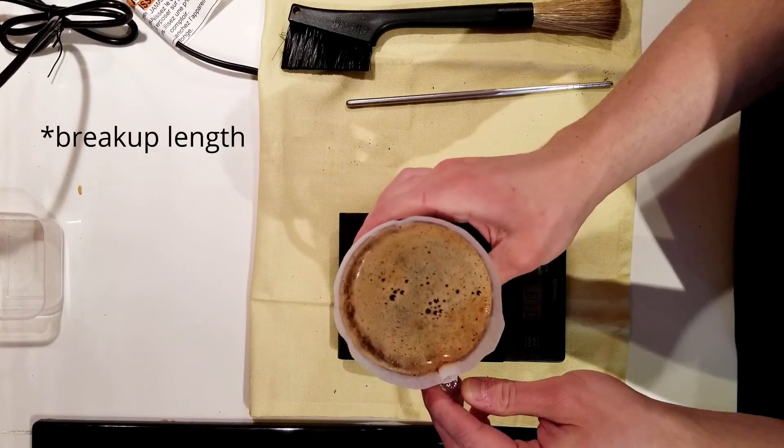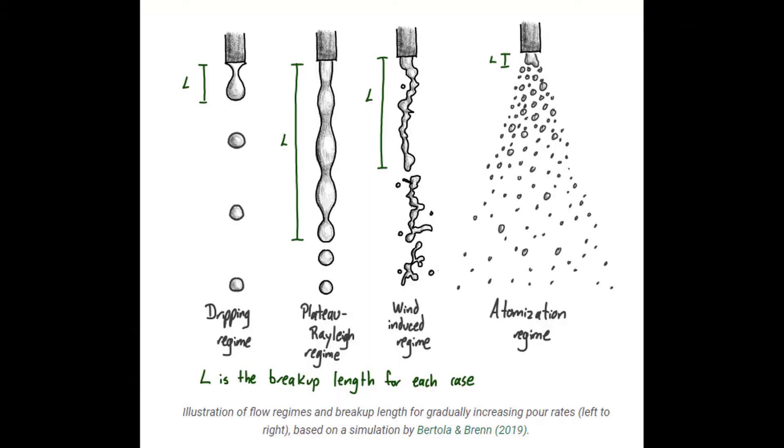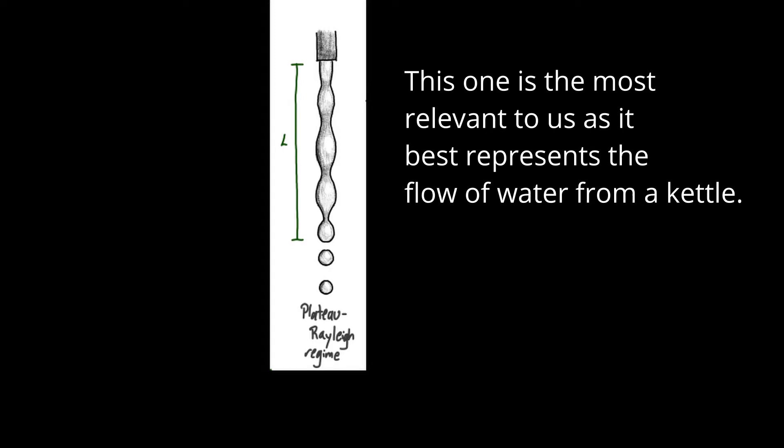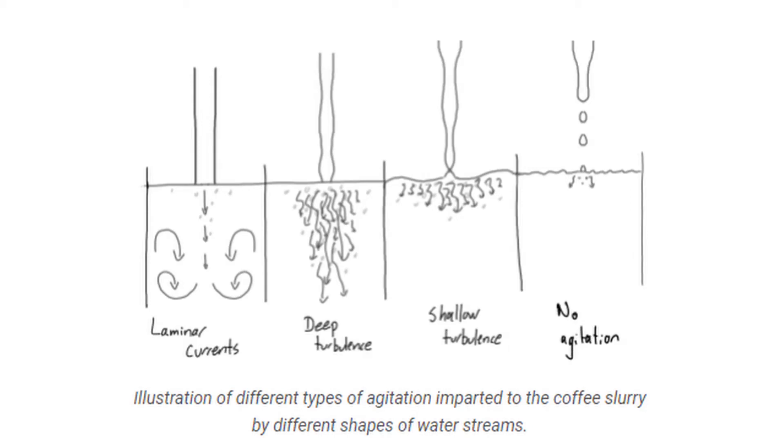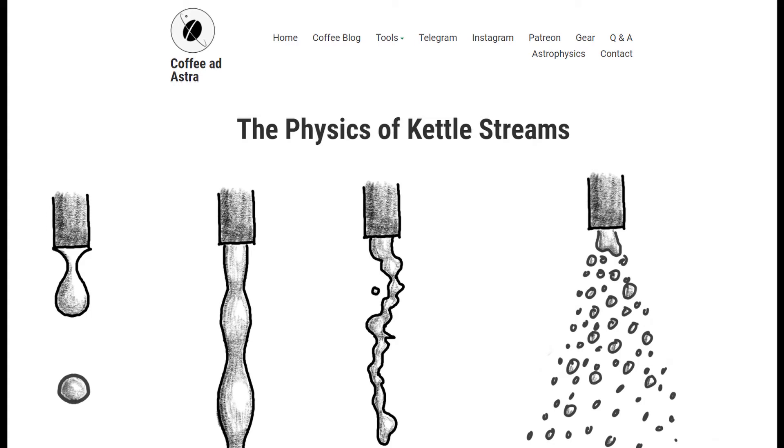This has to do with what is called the break point of water, where a stream of water inevitably turns into drops at some point the higher you raise the kettle. The splashing sound is the water droplets hitting the surface of the slurry. Your goal is to have the stream of water enter the coffee slurry just before it turns into droplets. Gagne explains all of this in one of his blog posts and talks about how the water is agitated differently based on your pouring height so I'd check that out if you want more details.